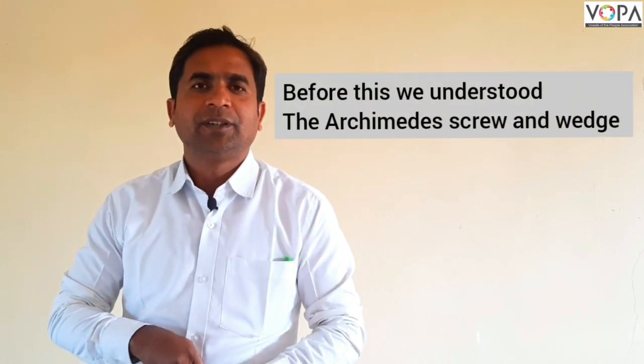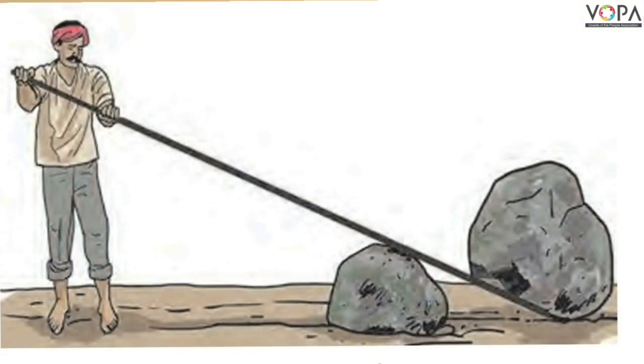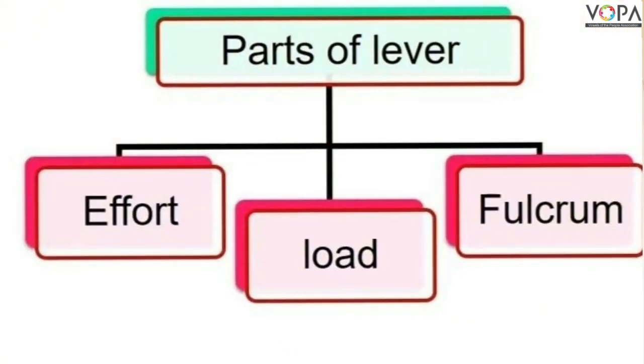Hello students and parents. Before this we understood the Archimedes screw, and now we discuss a simple machine: the lever. Look at this picture — a worker is moving a big stone with the help of a long, strong crowbar. It has three parts: one is fulcrum, second is load, and third is effort.